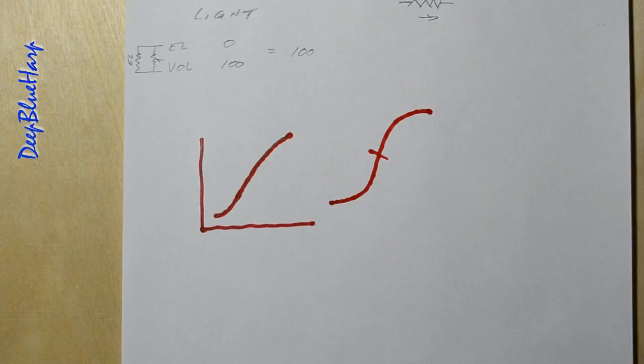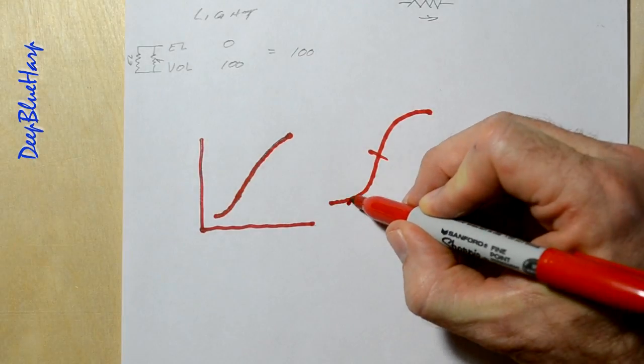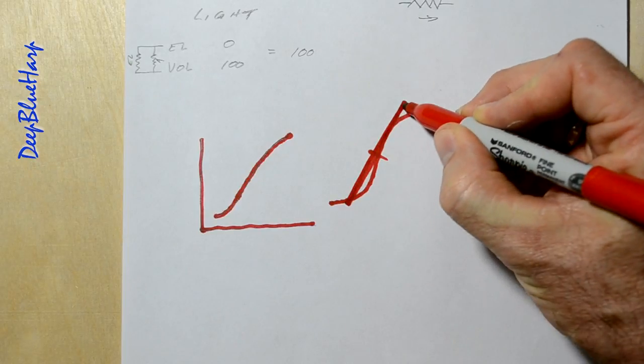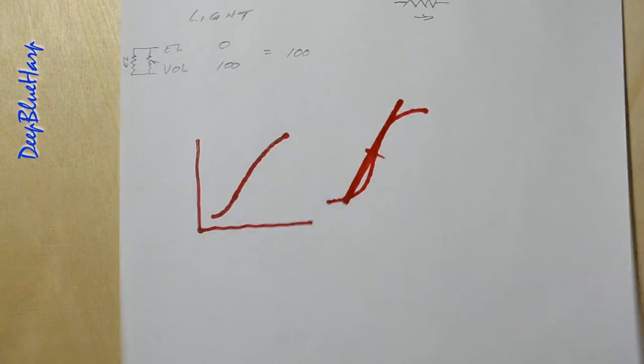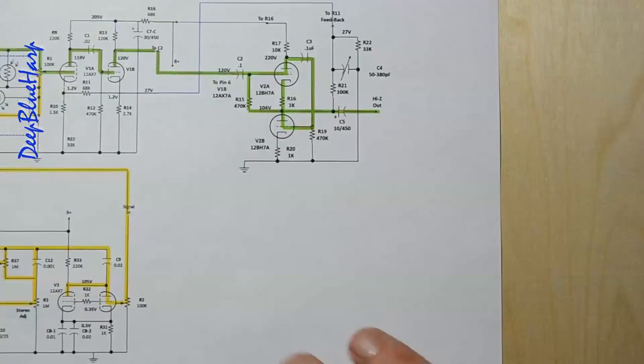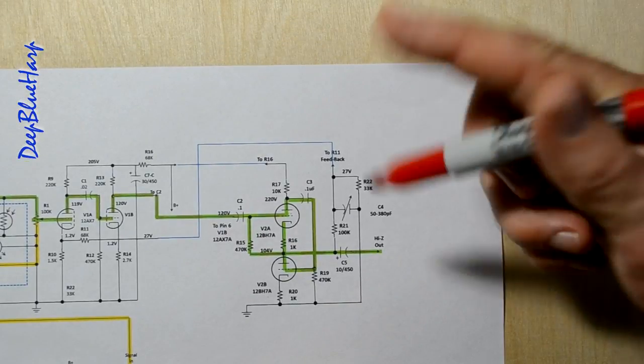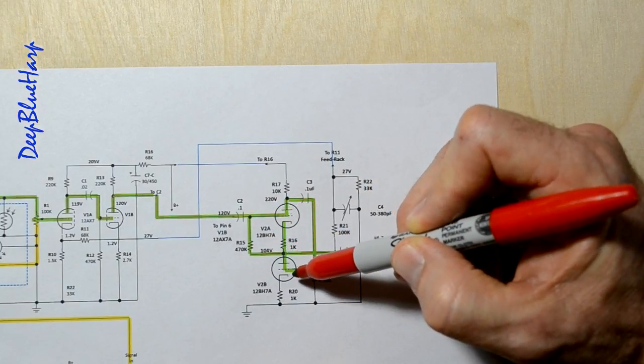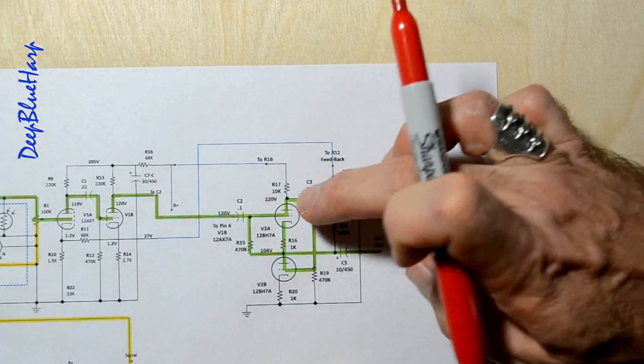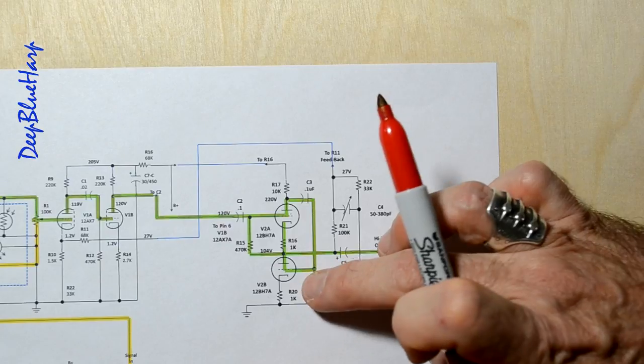Now a white cathode follower is a push-pull design. It does not need a phase splitter up ahead and it is a low impedance output. What makes this one a little different is that unlike a typical white follower, a white follower normally doesn't have a signal going both into the grid and to the plate of the bottom tube. This one is actually doing the amplification and this is providing some regulation.